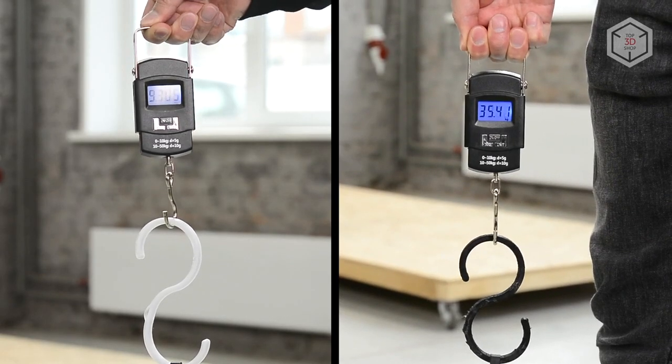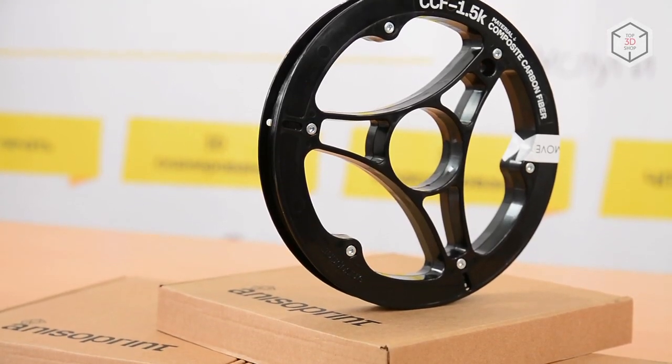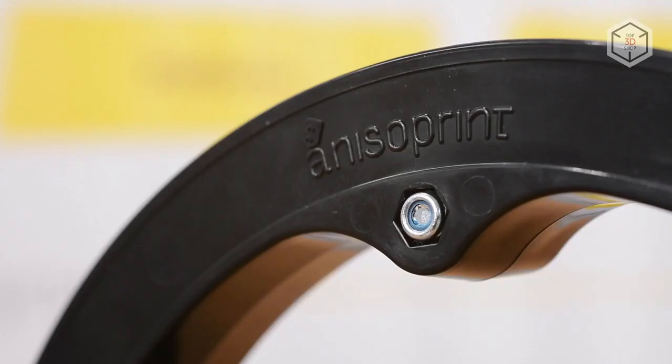CCF carbon fiber is manufactured by Anisoprint and comes in spools of 750 meters. One such spool is included with a 3D printer.